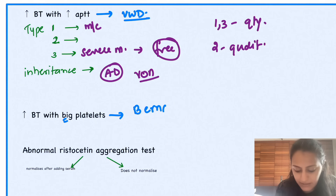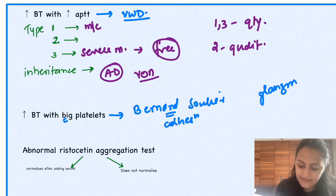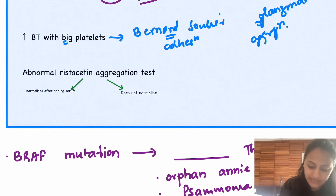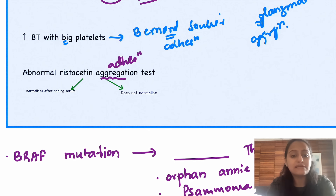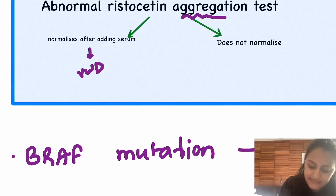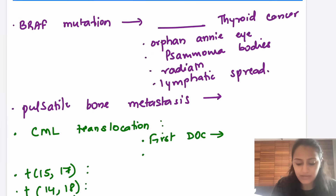Bernard-Soulier is a platelet adhesion defect. Glanzmann's is a platelet aggregation defect. When you have an abnormal ristocetin aggregation test, von Willebrand disease and Bernard-Soulier are the two conditions where adhesion is defective. If the ristocetin test normalizes after adding normal serum, it is von Willebrand disease; if it does not normalize, it is Bernard-Soulier disease.